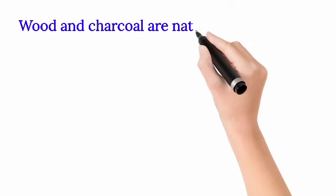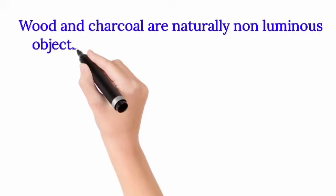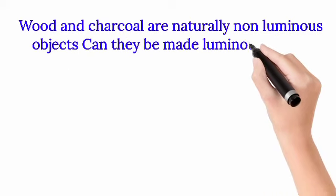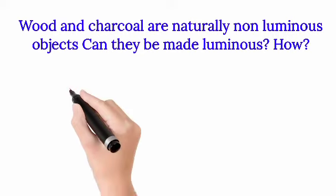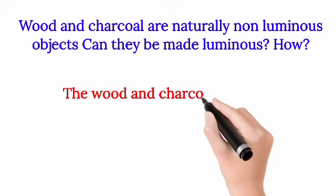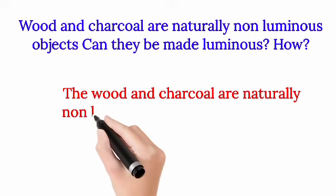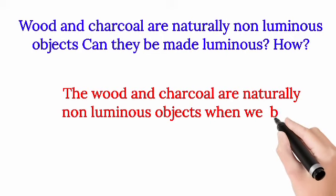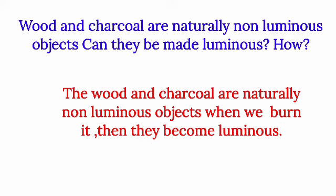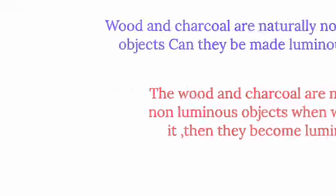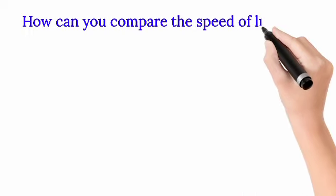Question 2: Wood and charcoal are naturally non-luminous objects — can they be made luminous? How? (کوئلہ اور لکڑی عام حالت میں غیر روشن اجسام ہیں — کیا انہیں روشن بنایا جا سکتا ہے؟) Answer: Wood and charcoal are naturally non-luminous objects, but when we burn them they become luminous. (جب انہیں جلایا جاتا ہے تو یہ روشن ہو جاتے ہیں۔)